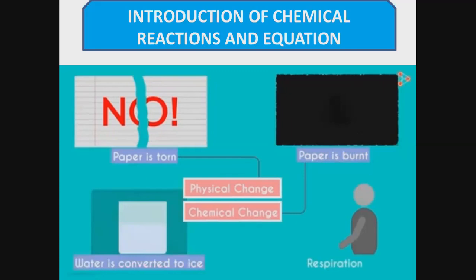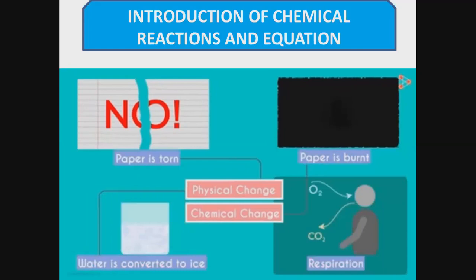Our third example is water converted into ice. As we know, by applying heat, ice can be converted into water. Its state changes but no new substance is formed, so it is considered a physical change. Our fourth example is respiration — it's a very interesting example. In respiration, we inhale oxygen and exhale carbon dioxide, so it is also considered a chemical change.